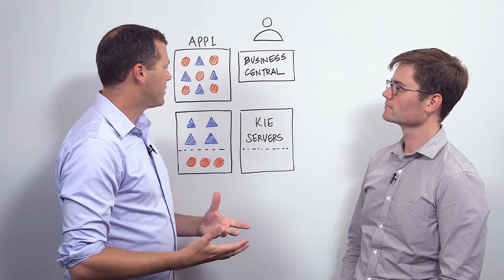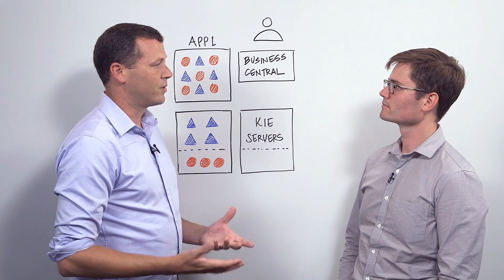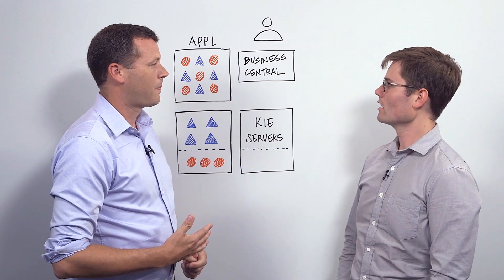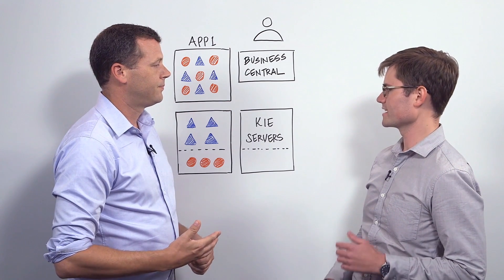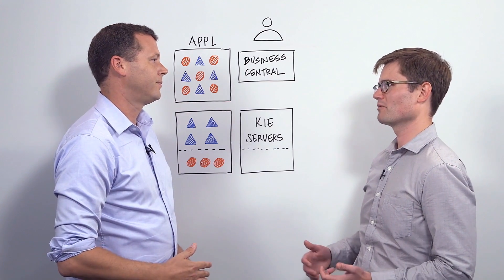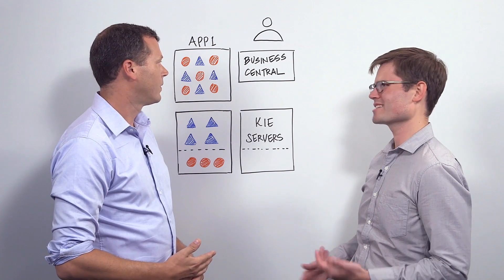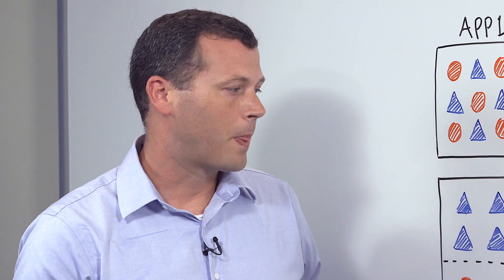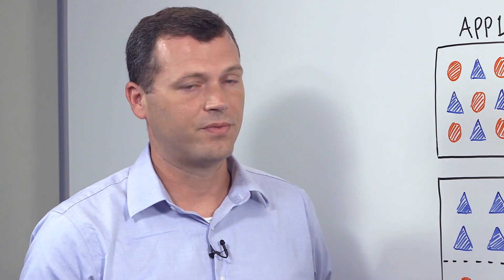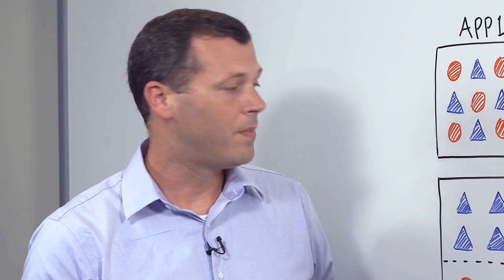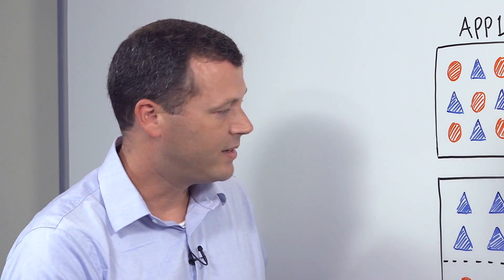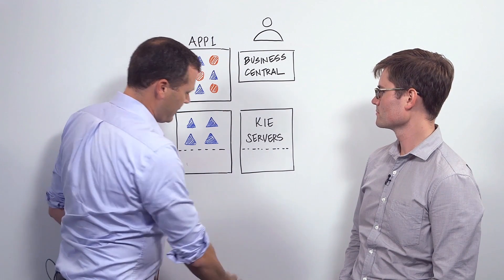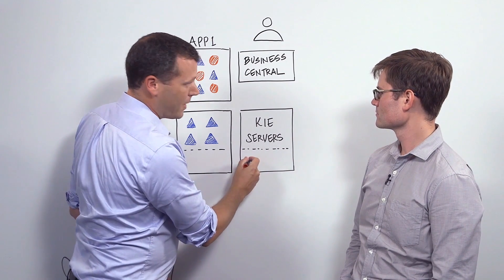Another way is through the KIE server — KIE stands for Knowledge Is Everything. That KIE server sounds pretty interesting. What benefits does it provide and what use cases is it appropriate for? For the example you were talking about, the insurance quote would be a perfect situation for a KIE server. The KIE server would then contain all of your rules instead of having them embedded within your application.